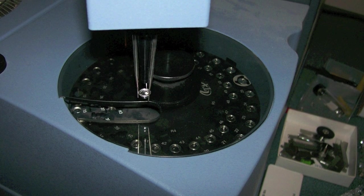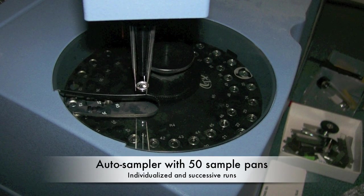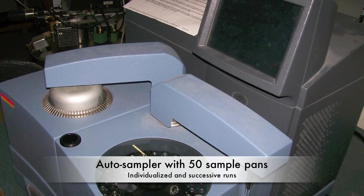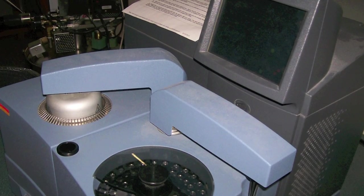Unlike the Q20 DSC, the Q2000 can do experiments at controlled cooling rates. It also has an auto-sampler containing 50 spots for sample pans and 5 spots for reference pans. This allows runs to be individualized and performed in succession without operator intervention.